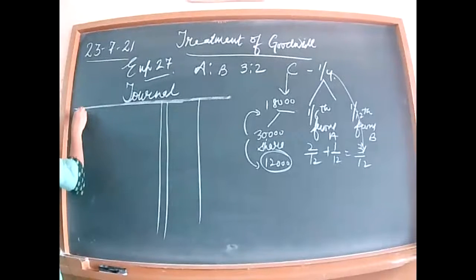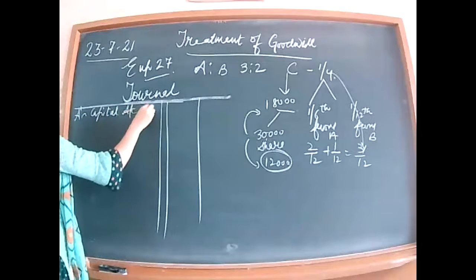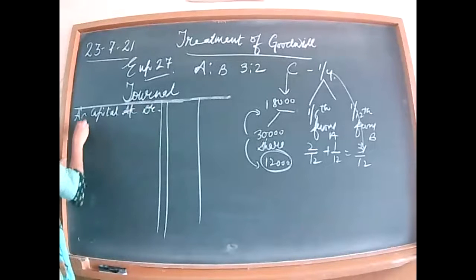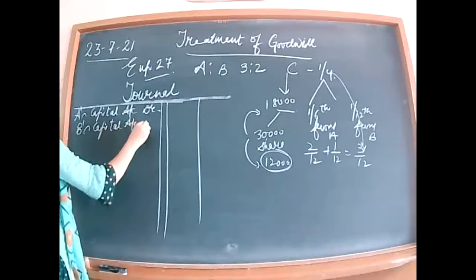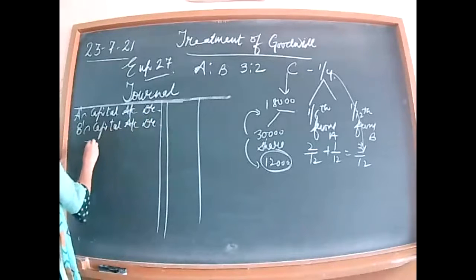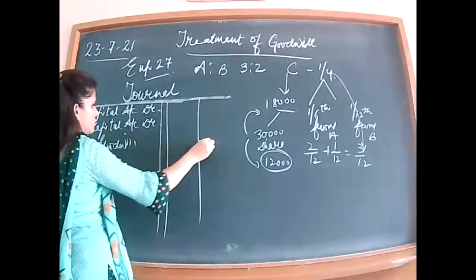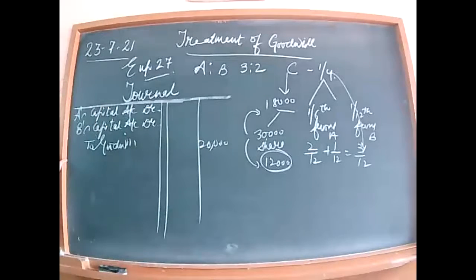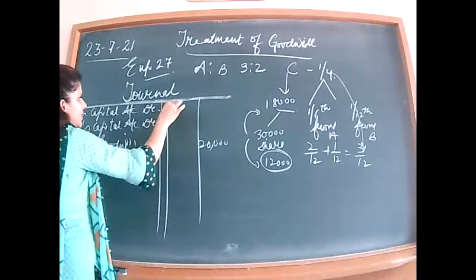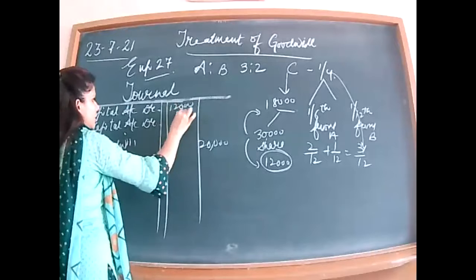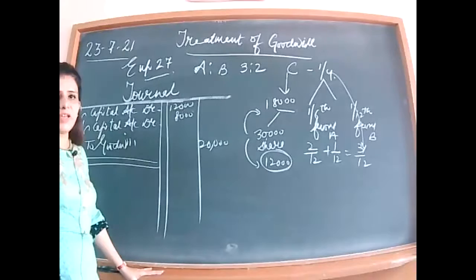First entry: write off existing goodwill. A's capital account debit and B's capital account debit to Goodwill. The existing goodwill in the books is 20,000. 20,000 split in old ratio 3:2 gives 12,000 to A and 8,000 to B. Being already existing goodwill written off between old partners in their old ratio.